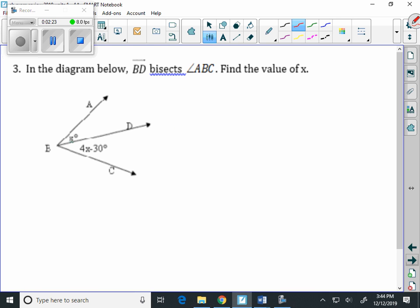In the diagram below, BD bisects angle ABC, and we want to find the value of X. Well, 4X minus 30 equals X. Again, it's the same idea as the previous problem. Because BD, this length right here, it cuts each of these angles. It makes each of those angles congruent. So we can set them equal to each other.